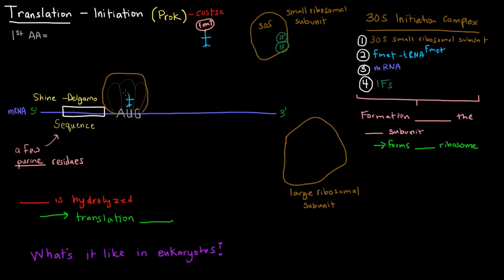So here we have the formylated methionine, so that's going to come over. So is the 30S ribosomal subunit with its initiation factors, and they're all going to come over to the mRNA. So now, the first amino acid, of course, that's going to be incorporated is the formylated methionine.